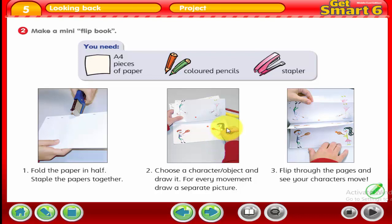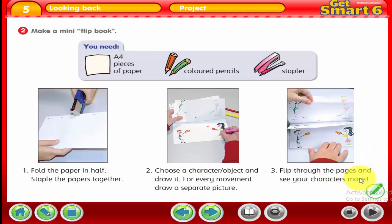As you can see in the picture, there is a boy and a girl playing tennis. Try to draw a picture for every movement. For example, this girl is holding a ball, then try to hit the ball with the racket. The ball starts to move away until it reaches the boy. Each movement should be on one page.